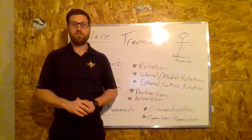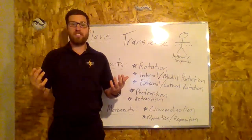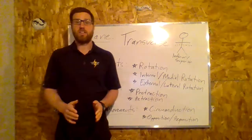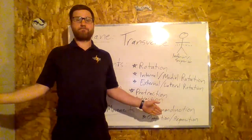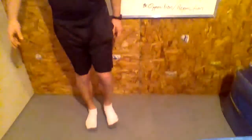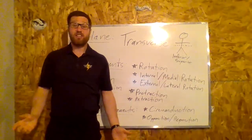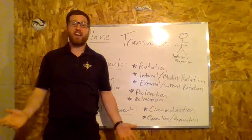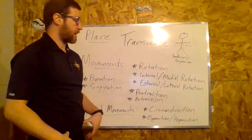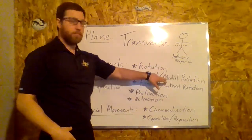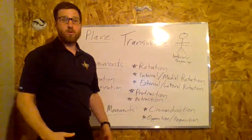The opposite is external rotation or lateral rotation. At the shoulder it would look something like this, and at the hip it would look something like this. So it's rotation but it has a direction to it. We're really looking at the shoulder and the hip for internal, external, medial, and lateral rotation.